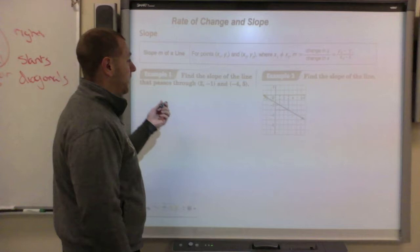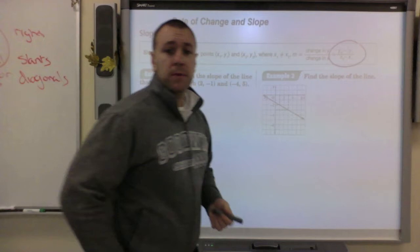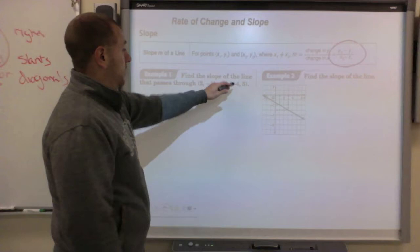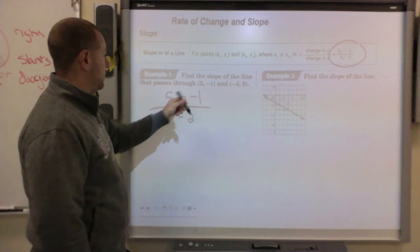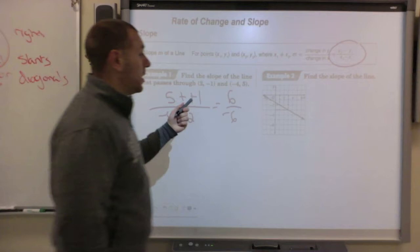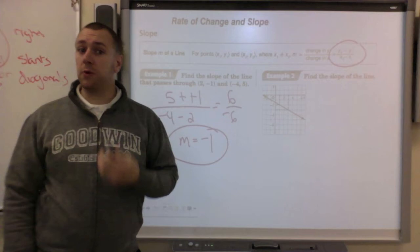This is the slope formula: y2 minus y1 over x2 minus x1. So first up: 5 minus negative 1 over negative 4 minus 2. Remember, minus a negative becomes plus, so we get 6 over negative 6. The slope, or m, equals negative 1, because we always reduce slope to lowest terms.